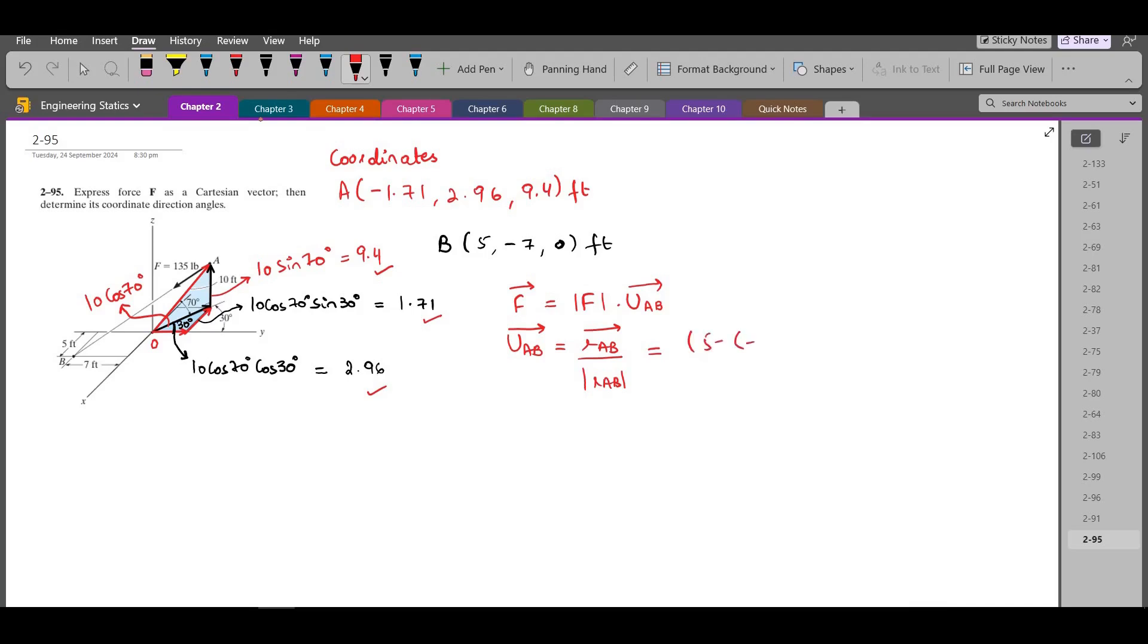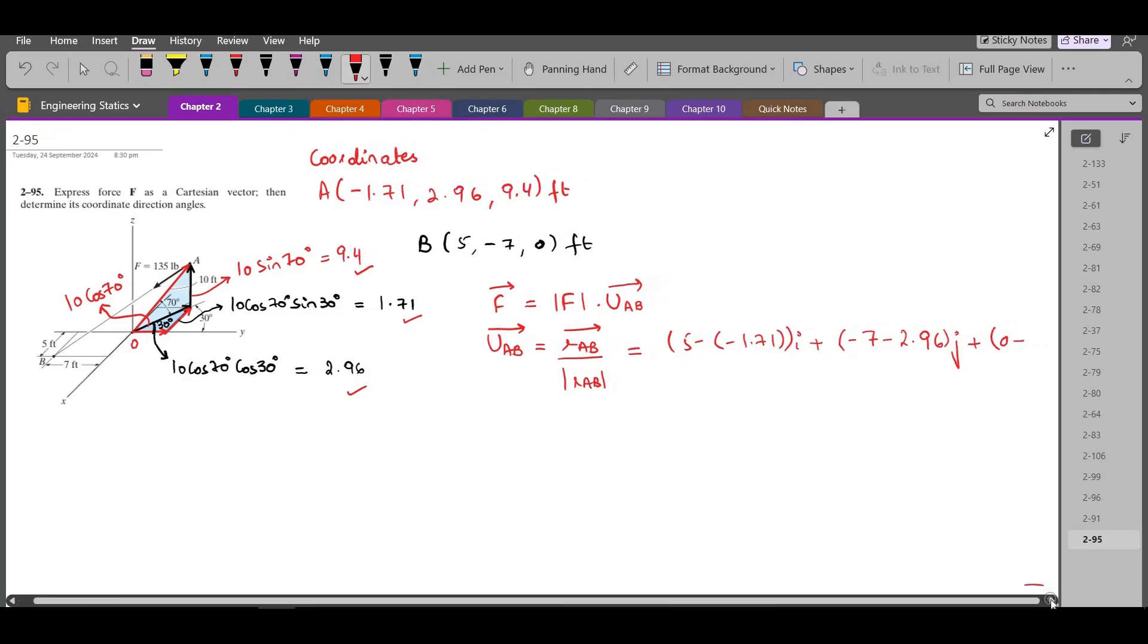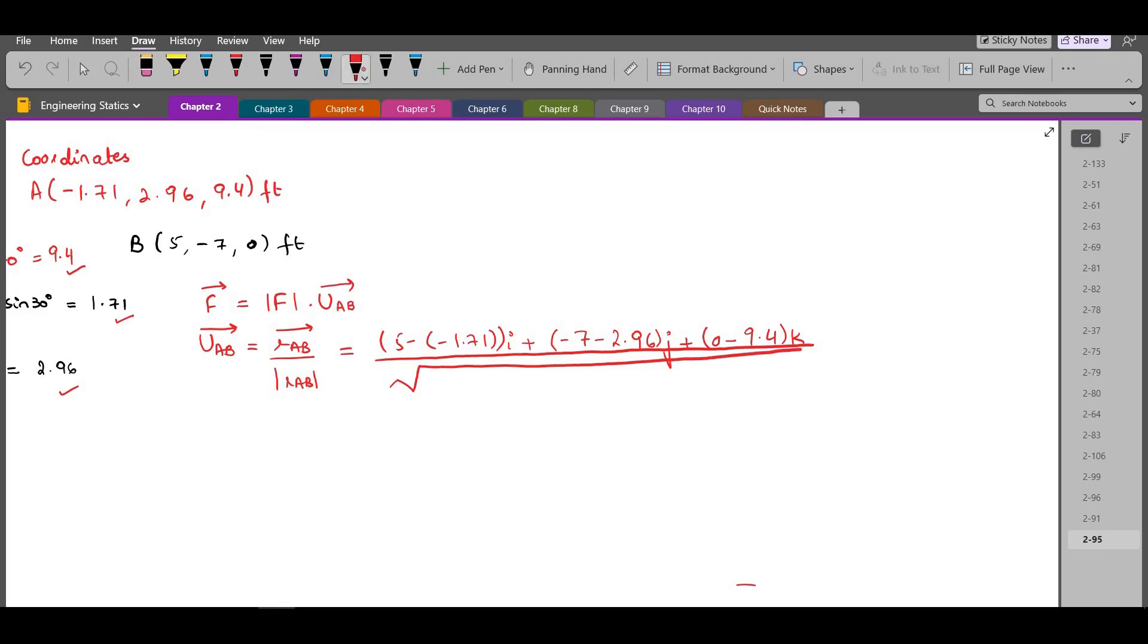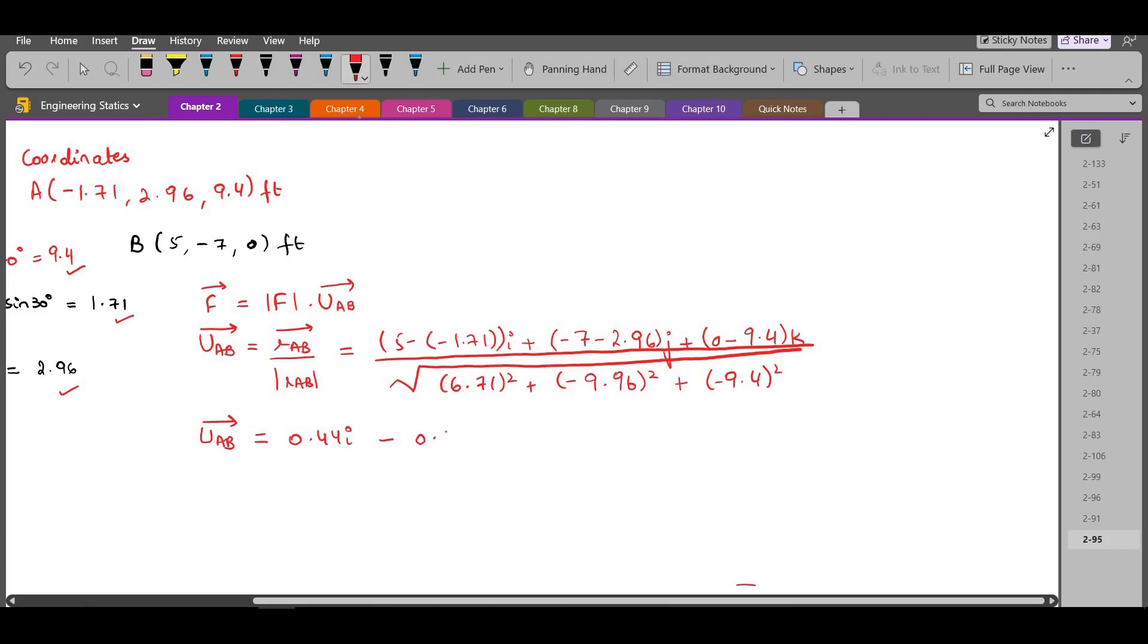So 5 minus negative 1.71 i plus negative 7 minus 2.96 j plus 0 minus 9.4 k divided by the square root of 6.71 square plus negative 9.96 square plus negative 9.4 square. So when we simplify it, the unit vector AB comes out to be 0.44 i minus 0.65 j minus 0.62 k.